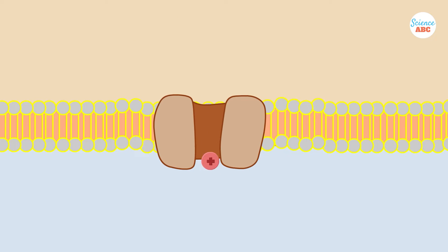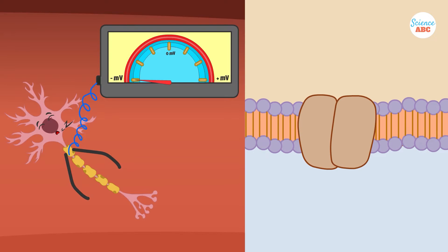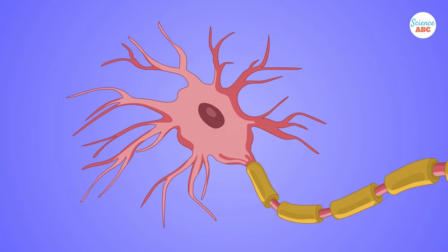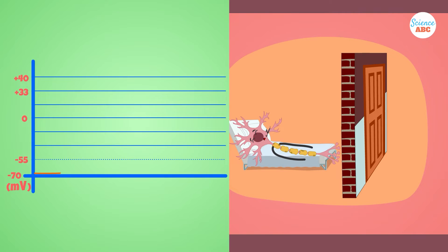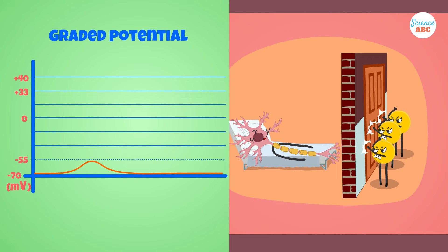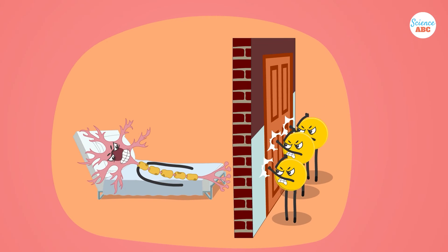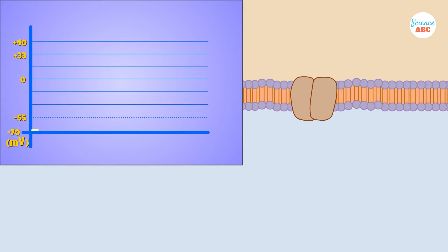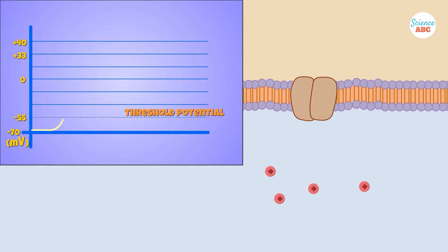Ion channels allow ions in and out, causing the voltage of the cell to move away from its resting potential. At any given time, a neuron keeps receiving small amounts of incoming signals, which results in small fluctuations in the membrane voltage. These are called graded potentials, but they are not strong enough to result in the firing of a neuron. A neuron fires or generates a nerve impulse only when the total sum of input signals is large enough to cross a threshold potential of negative 55 millivolts.